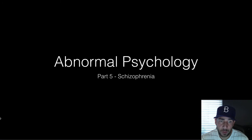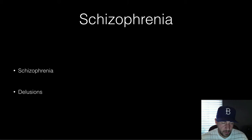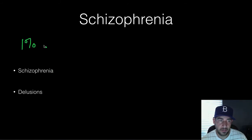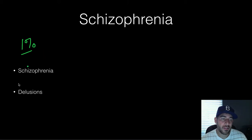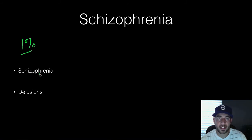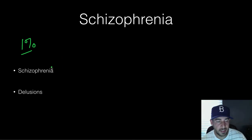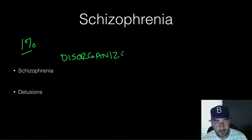Part five of abnormal psychology — we're talking about schizophrenia. Schizophrenia is one of the worst psychological problems you can have. It affects roughly about one percent of the population, and when we get to the genetics part we'll talk about it, but it can run in families — if you have an identical twin that has it, your risk goes up. Basically, schizophrenia is disorganized thinking.